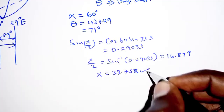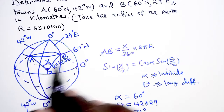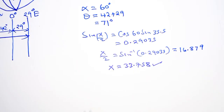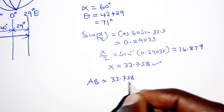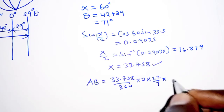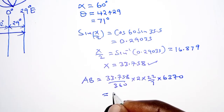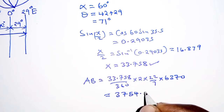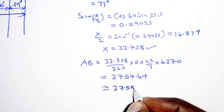This angle x = 33.758° is subtended by arc AB, the shortest distance between towns A and B. Substituting into the arc length formula: AB = (33.758 / 360) × 2 × (22/7) × 6370. Working this out gives approximately 3754.64, which is approximately 3755 kilometers.